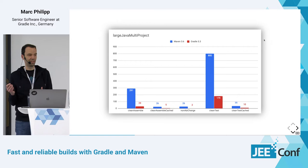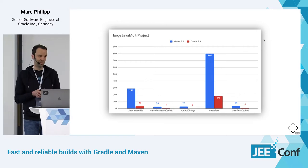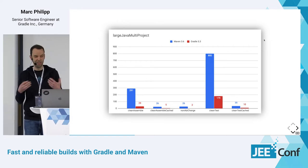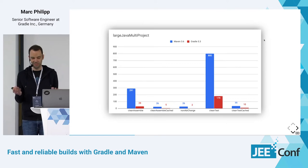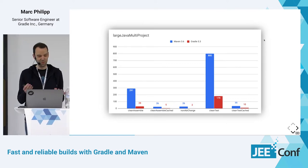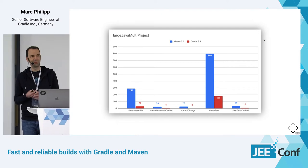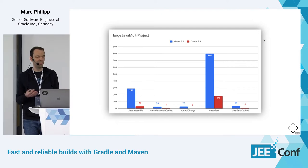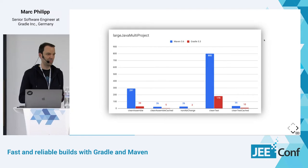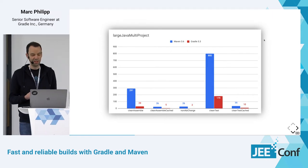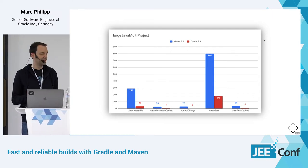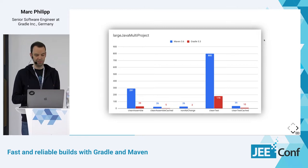We're opinionated — I work for Gradle, so we think Gradle is the best build tool. We should all switch to Gradle. But we acknowledge that some people prefer Maven, or don't have the time to worry about their build tool and just want it to work. So we built the build cache for Maven as well.